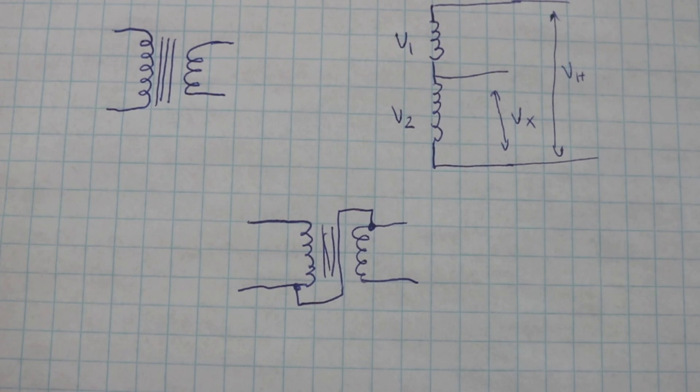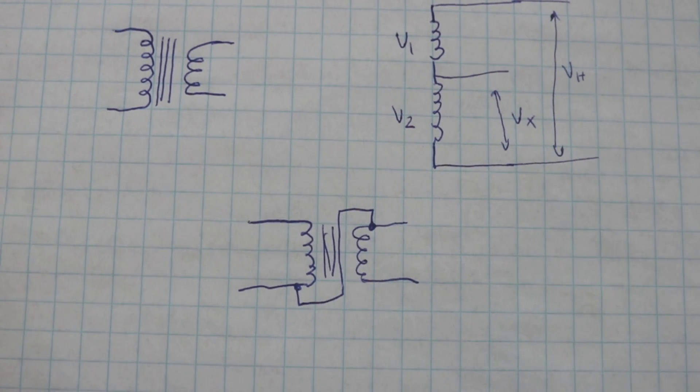From that depends the output voltage that you get because there is a polarity on the windings of the transformer. So if you connect in one way you will obtain at the output the sum of the two voltages or the difference depending if you connect here or here.